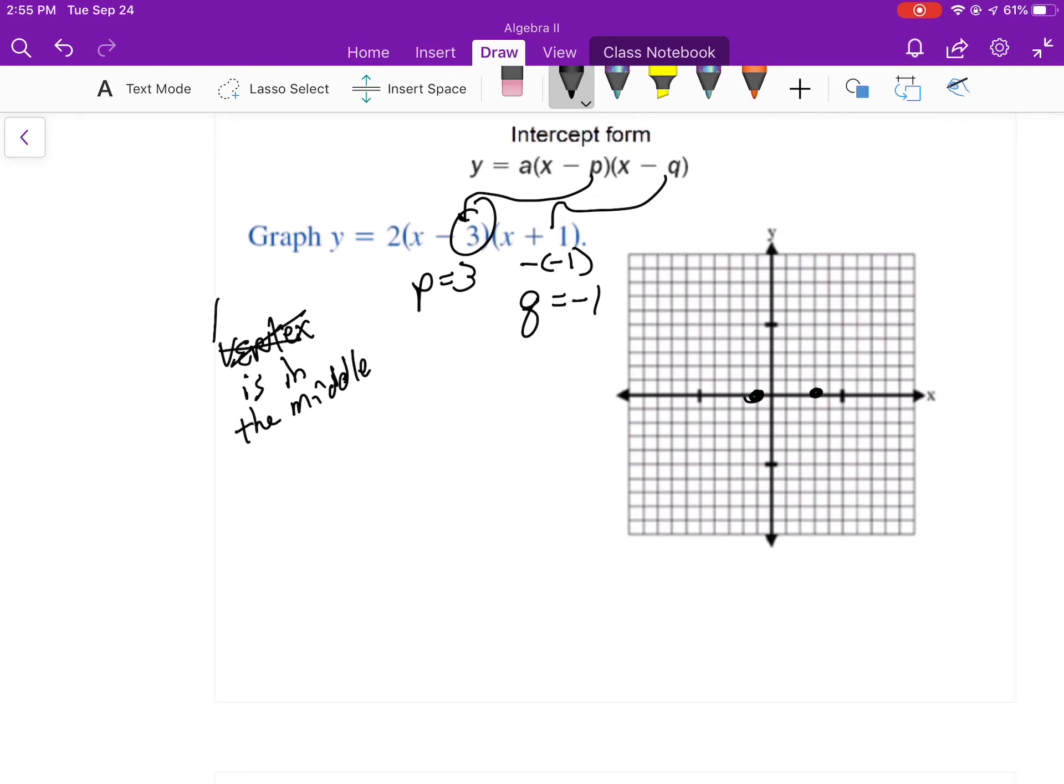I shouldn't say vertex, the axis of symmetry is in the middle of your x-intercepts. So to find the axis of symmetry, I'll take 3 plus negative 1 and divide by 2. If I take the average of those I'm going to get where my axis of symmetry is. So in this case, it's at 1.